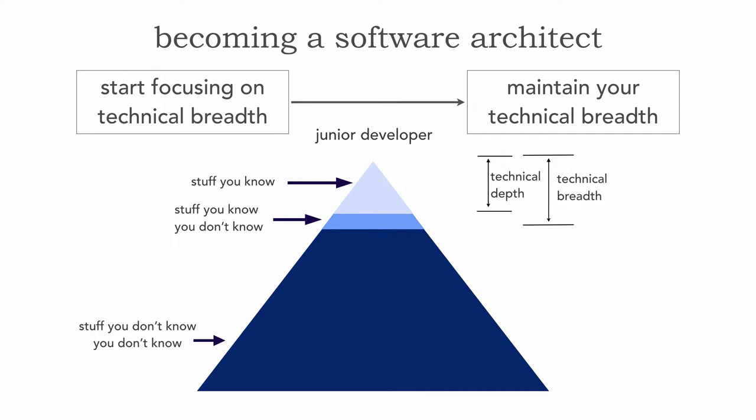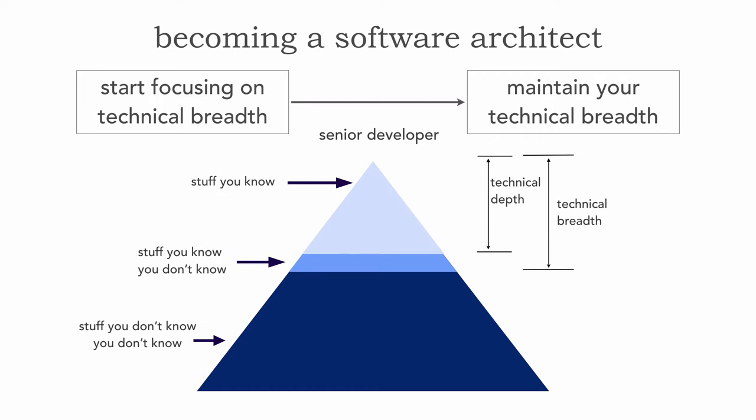As we progress in our career to more of a senior developer, we start increasing the level of the stuff you know because we take the stuff we don't know that we don't know and learn new frameworks and tools and become experts in those. Really what we're doing is bypassing that middle part of the triangle. Even as a senior developer, the lines between technical depth and technical breadth are still really close — and this is normal, this is actually a proper knowledge triangle for a developer.